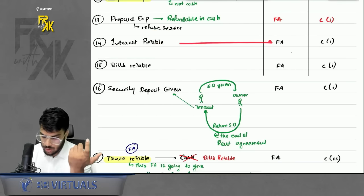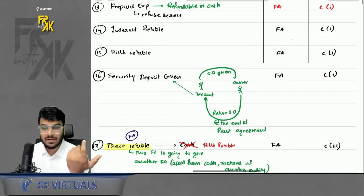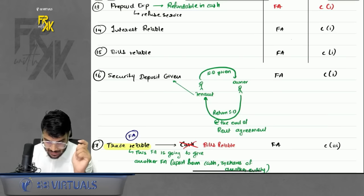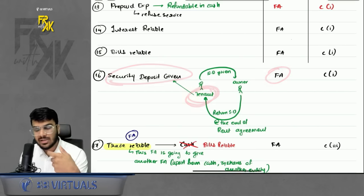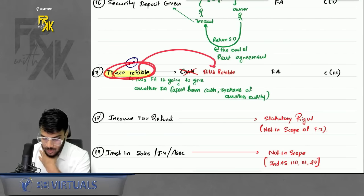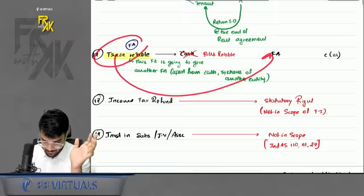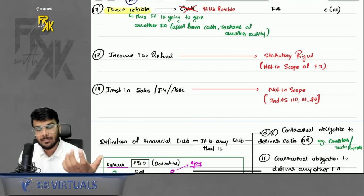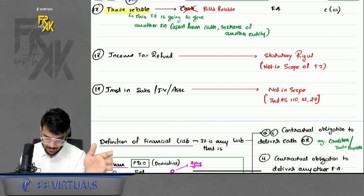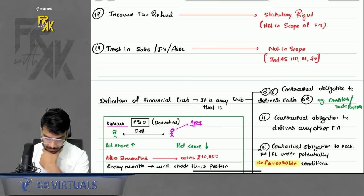Interest receivable — contractual right to receive cash, financial asset. Bills receivable — financial asset. Security deposit given — financial asset, because the tenant has a contractual right to receive the deposit back at the end of the agreement. Income tax refund — not a financial asset because it is a statutory right, not a contractual right. Investments in subsidiaries, joint ventures, and associates are covered under a separate standard.